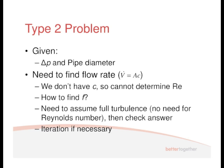For Type 2 problems, you're given the pressure drop and the pipe diameter, and you need to find the flow rate. We know V̇ = A × C, but we don't have C, because flow rate is a function of velocity. So we can't determine the Reynolds number — Re = ρCD/μ — if you don't have C, you can't work out the Reynolds number.